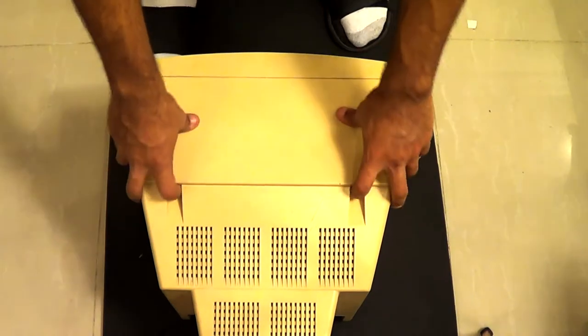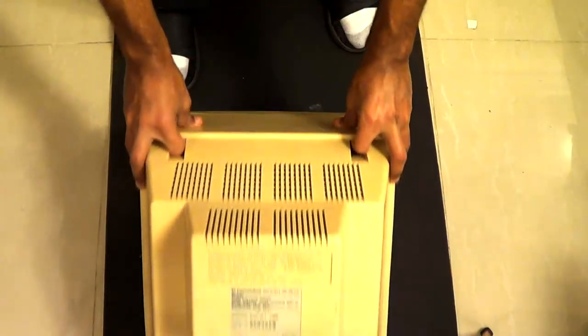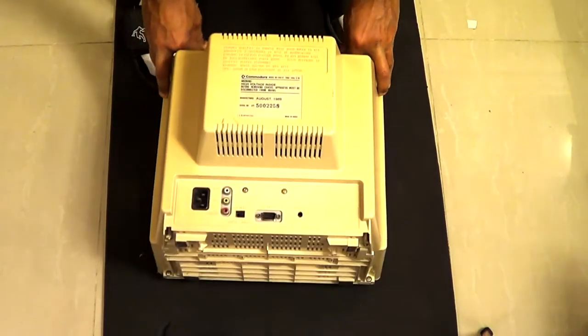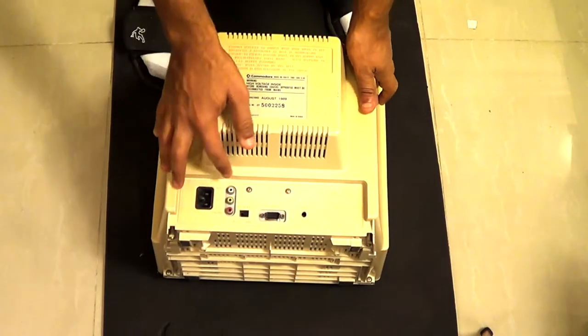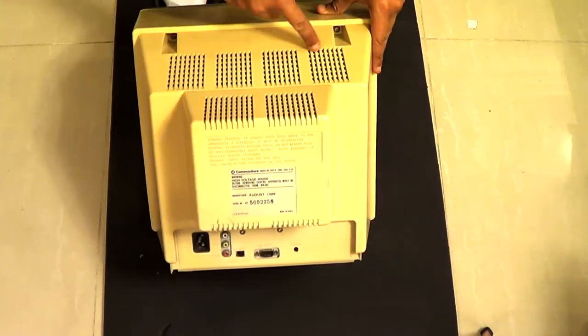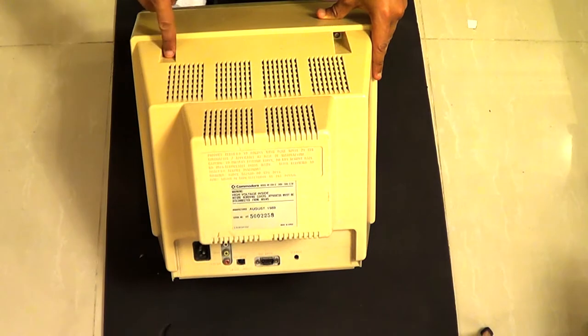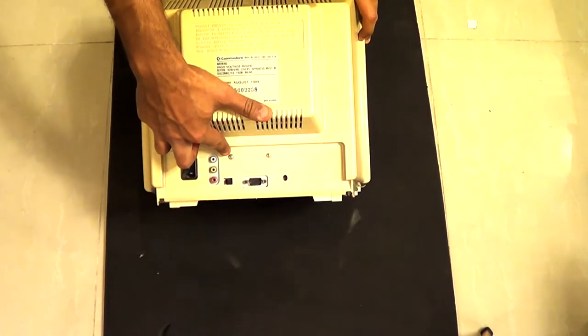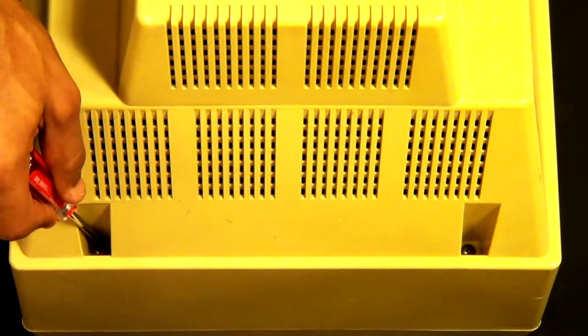From here, we need to remove the back case screws, and in my case, there are a total of 6 screws. Yours could be different. There are 4 main screws that hold the back, and 2 screws that are close to the video input. I'll go ahead and fast forward this process.